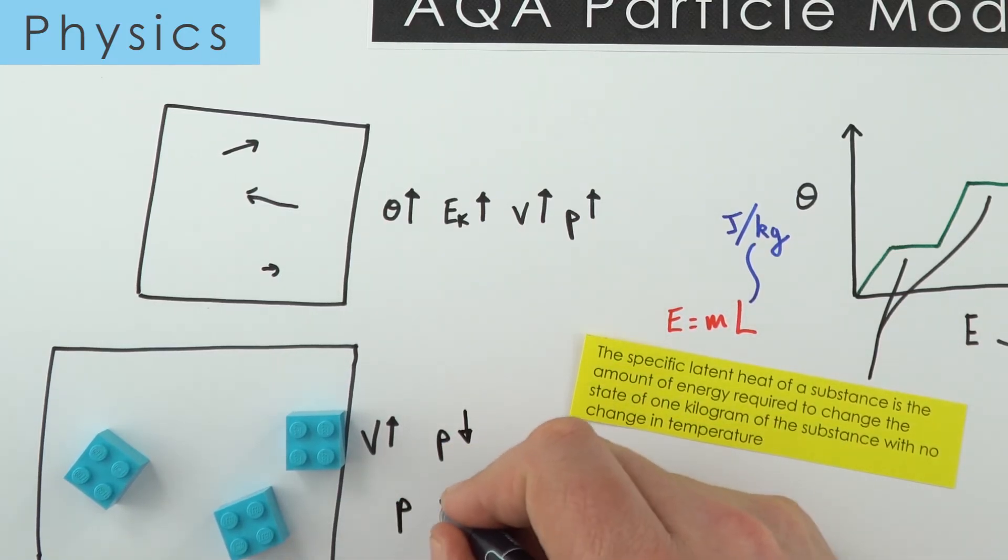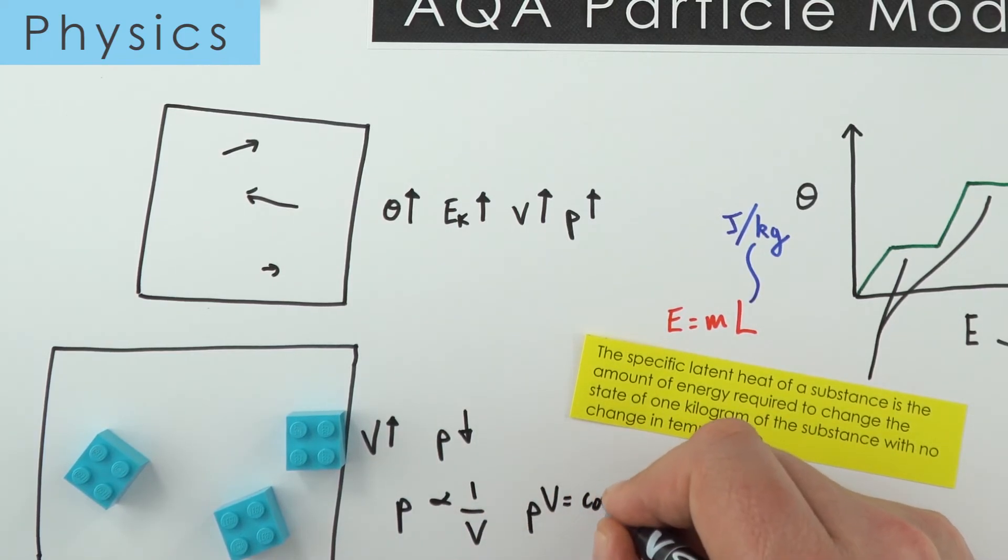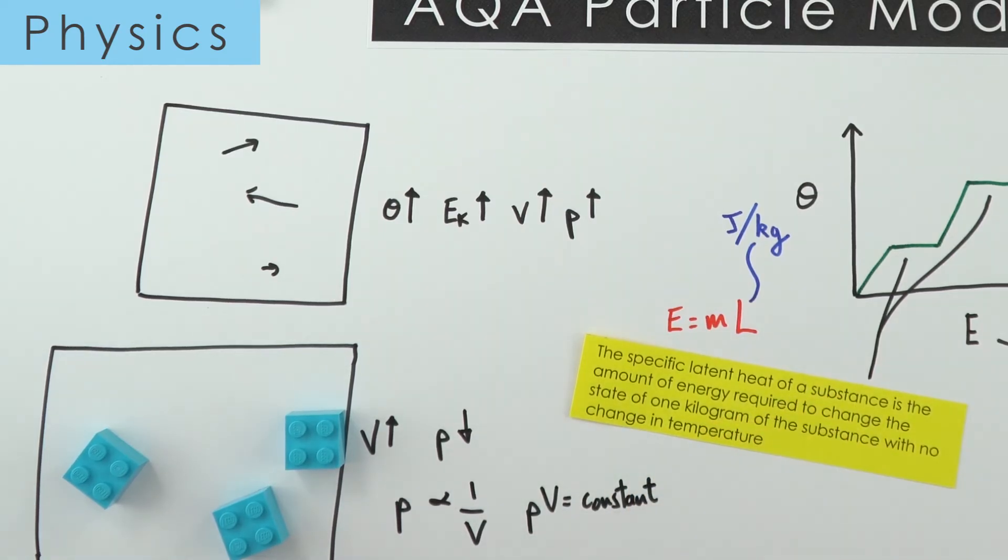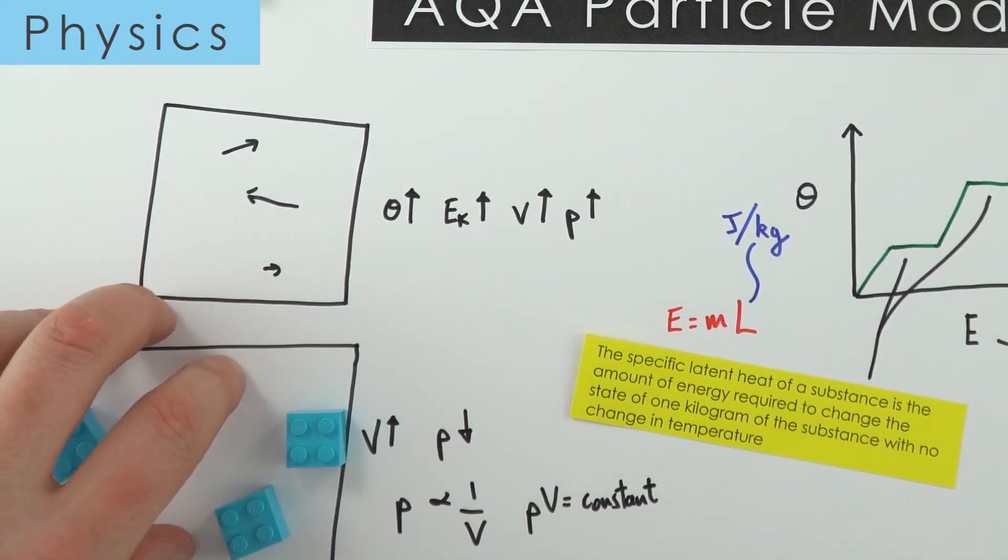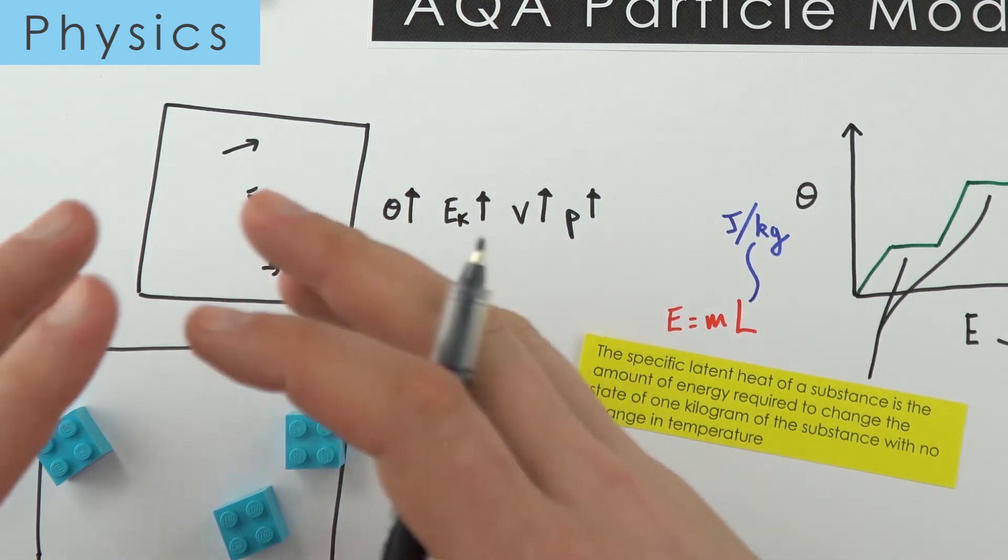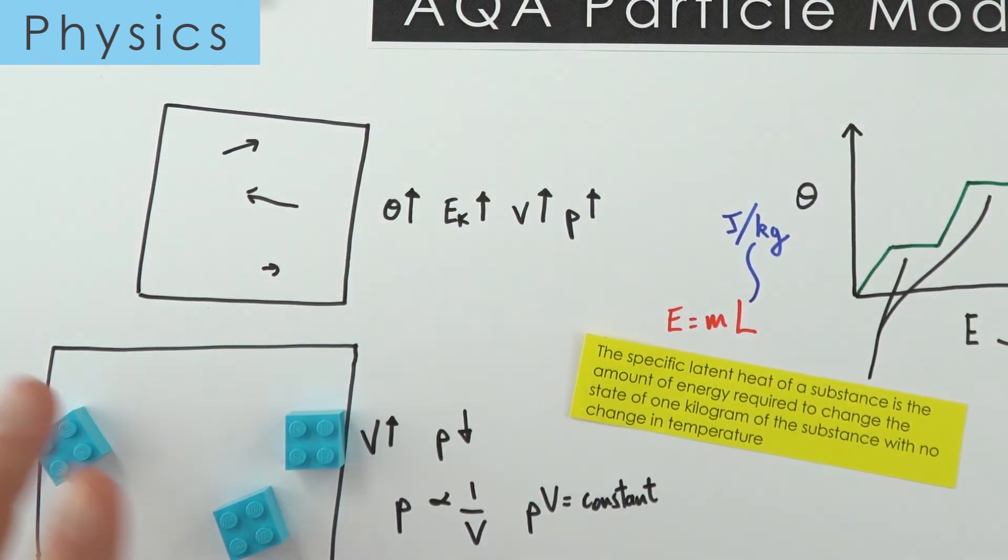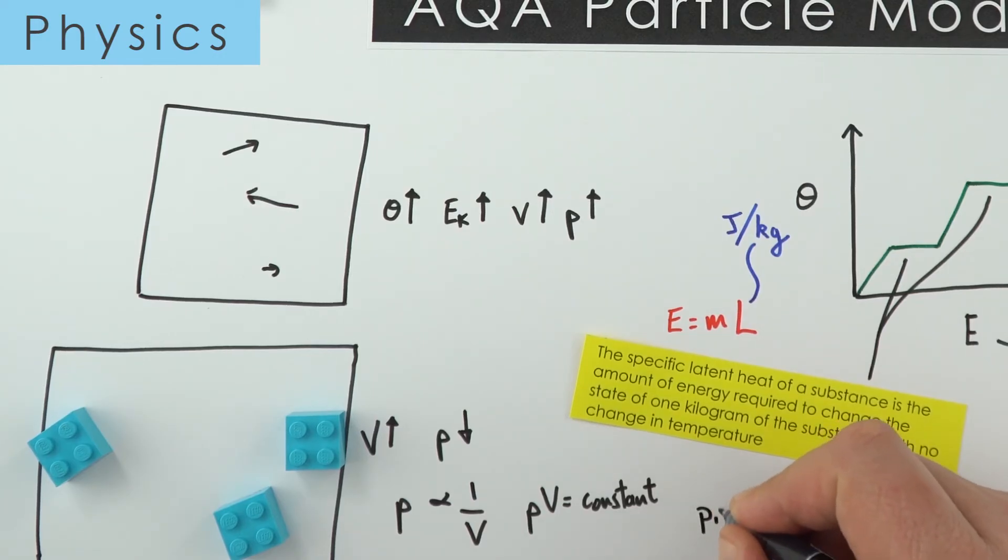What we can actually say is that the pressure is inversely proportional to the volume, or we could write that as pressure times volume equals a constant amount. That's really important, because it means if you knew the pressure and volume of some gas at the beginning, and you knew the pressure or volume at the end after you've maybe increased or decreased the volume, we can work out the new pressure or volume. Effectively, the pressure times volume before is going to be equal to the pressure times volume afterwards, provided it happens at a constant temperature.